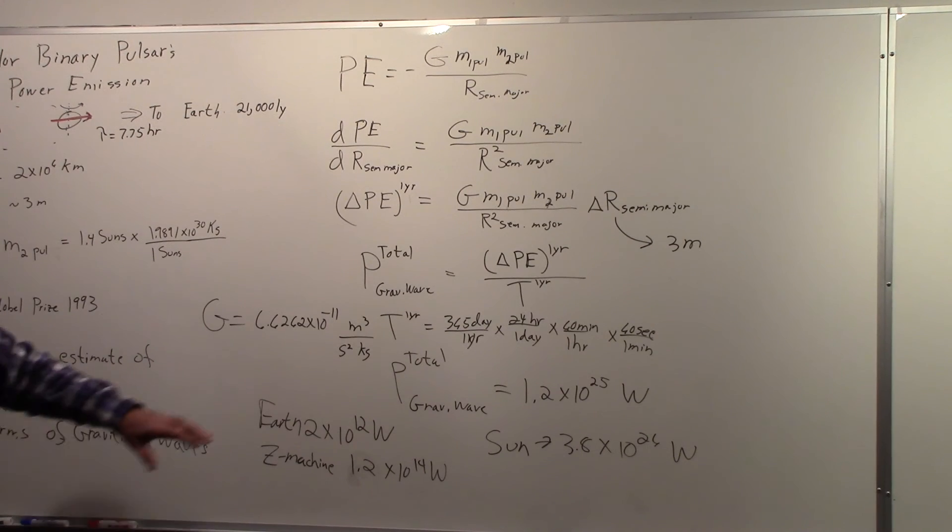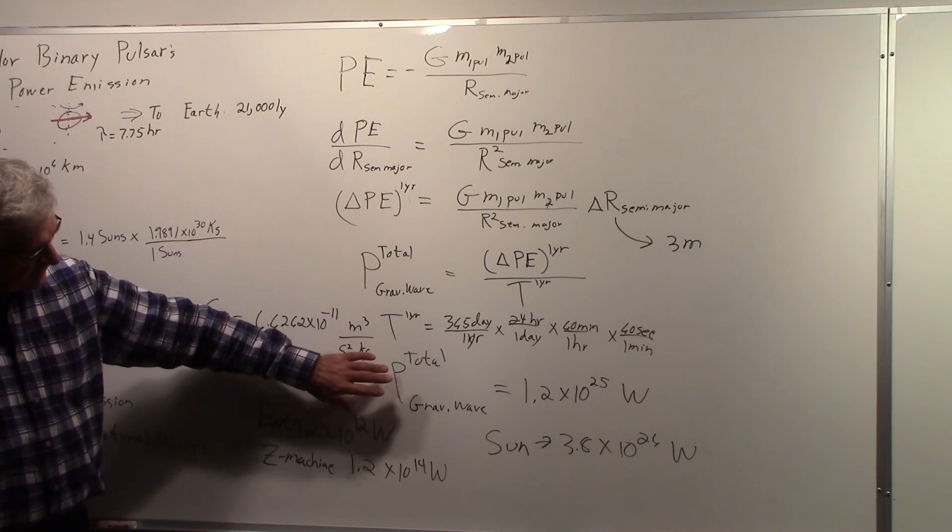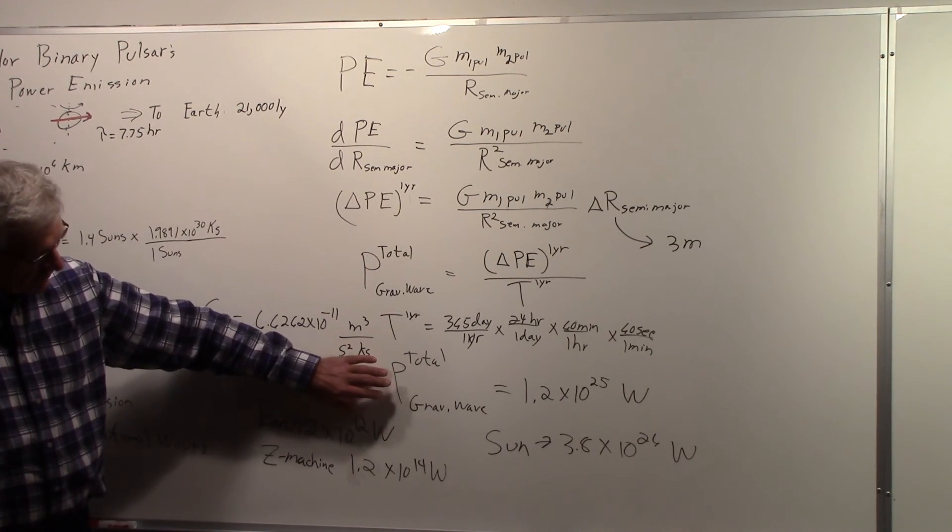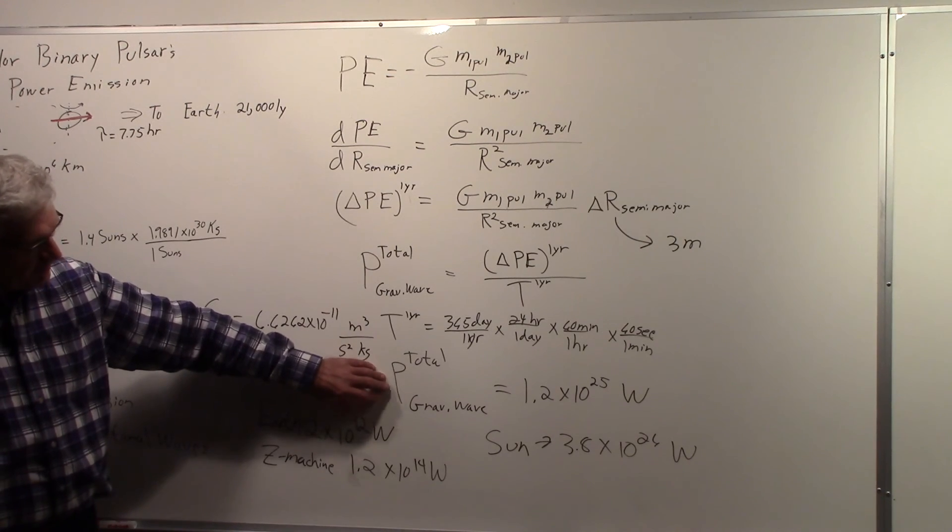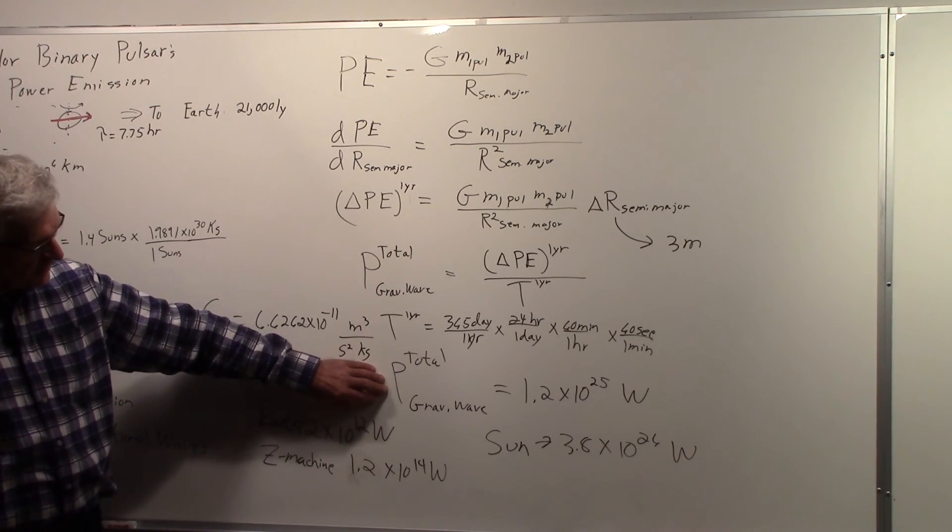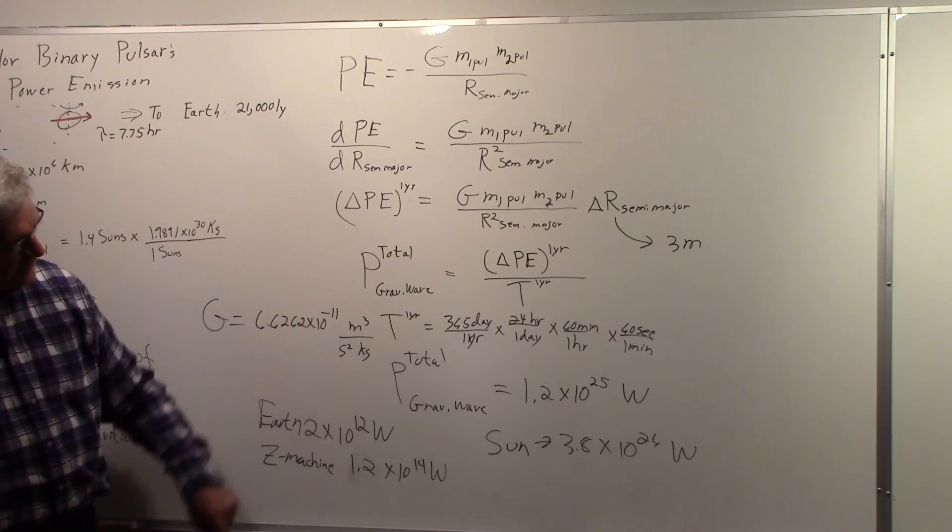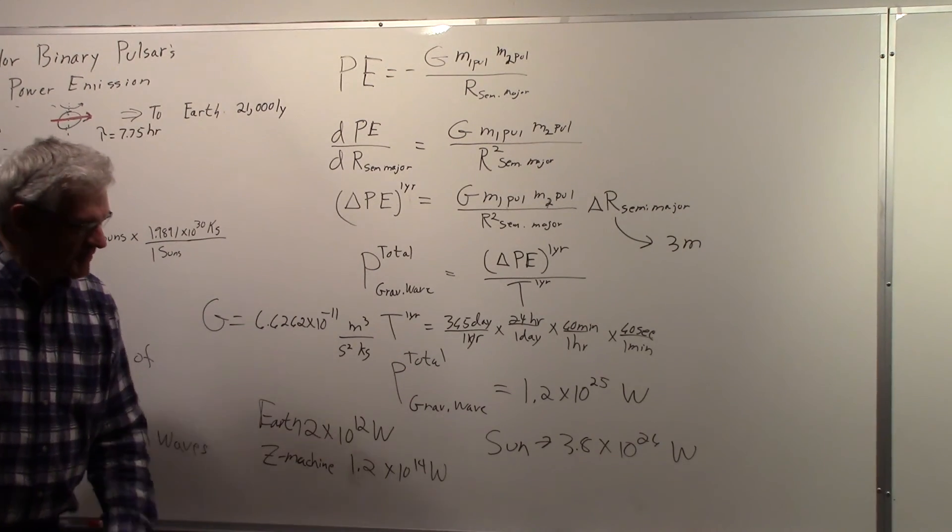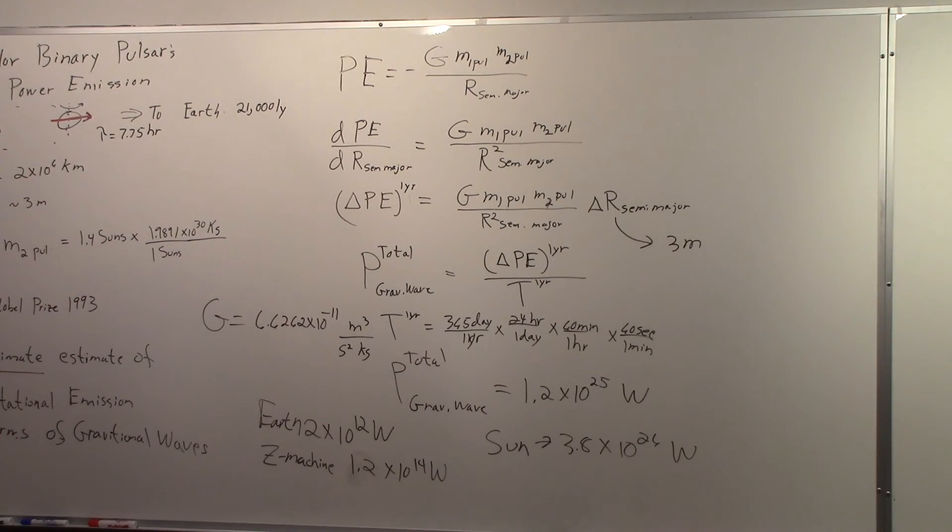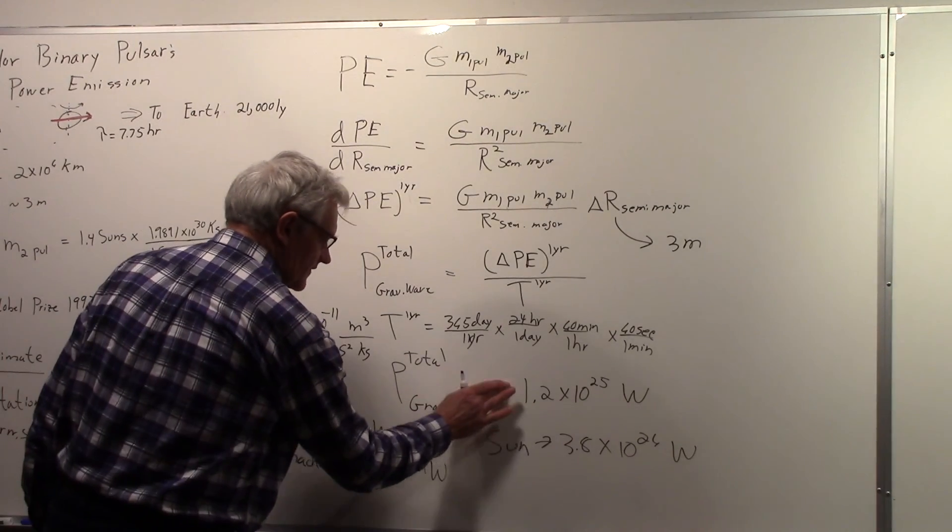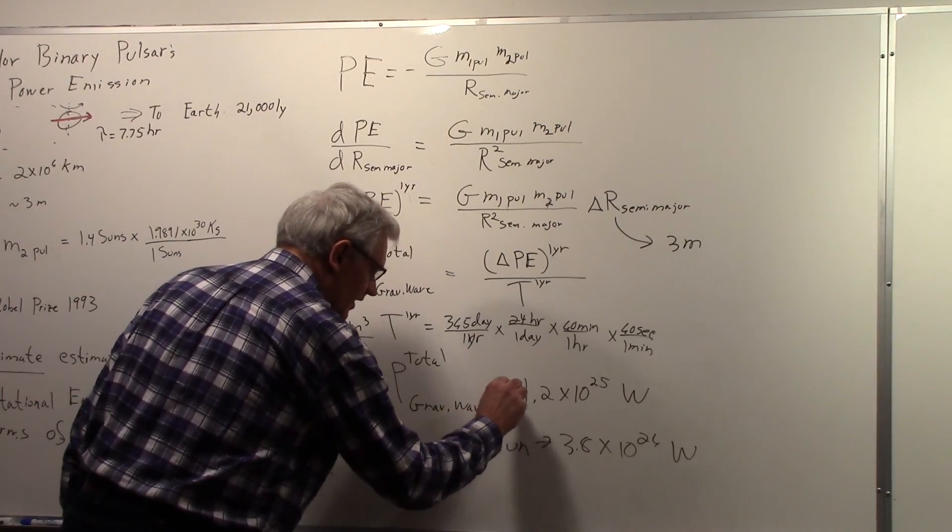So in comparison, the gravitational wave energy that's being emitted by the pulsars orbiting one another with the orbit decaying 3 meters is producing 1.2 times 10 to the 25 watts. And I want to emphasize this is an approximate calculation.